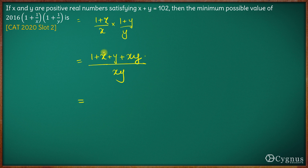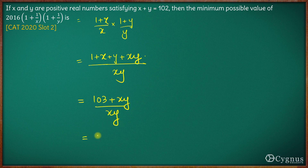Now we know x plus y is 102, so 1 plus x plus y becomes 1 plus 102, which is 103. So the expression becomes (103 plus xy) upon xy, which simplifies to 103 upon xy plus 1.